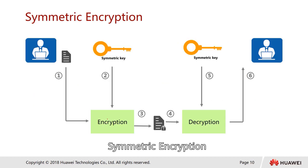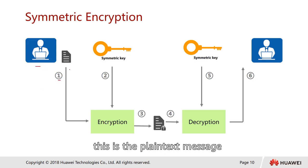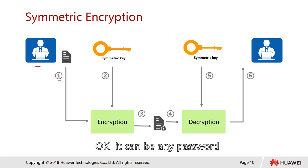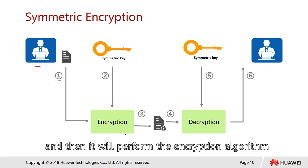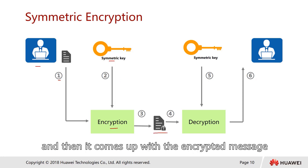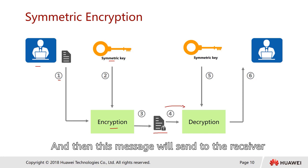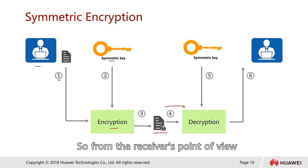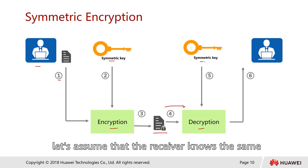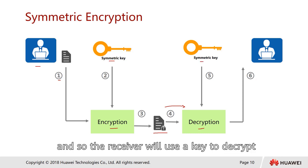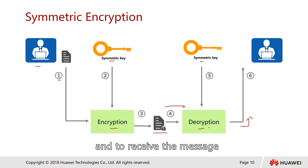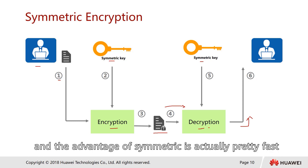Let's look at how symmetric encryption works. The sender takes a plain text message and applies a symmetric key — for example, a shared password — through an encryption algorithm to produce an encrypted message. This message is then sent to the receiver. The receiver, knowing the same shared key, uses it to decrypt and read the message. This is simple — this is called symmetric encryption, and its advantage is that it is fast.